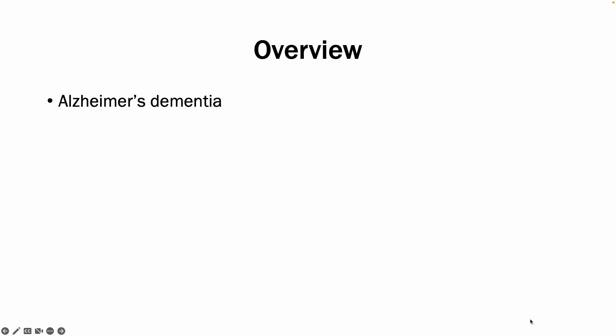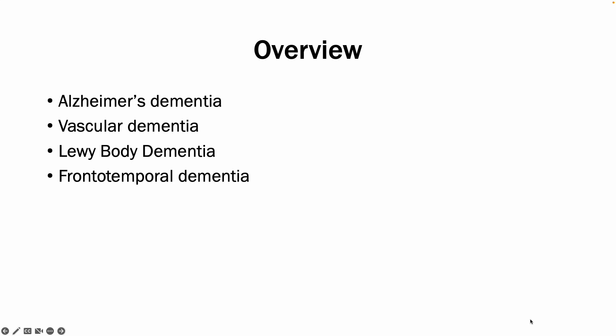Hi everyone. In this video I'll give you a brief overview of the types of dementia. It is an important topic as dementia affects over 700,000 people in the UK alone. I'll be talking about Alzheimer's dementia, vascular dementia, Lewy body dementia, and frontotemporal dementia.